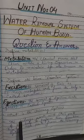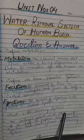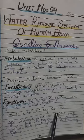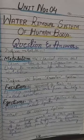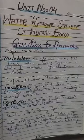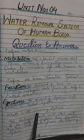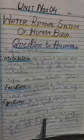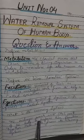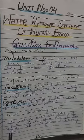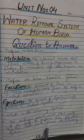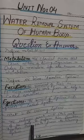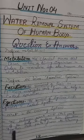What is the urinary system? The kidney works with other parts of the body to perform their function. Together, these parts form the urinary system.